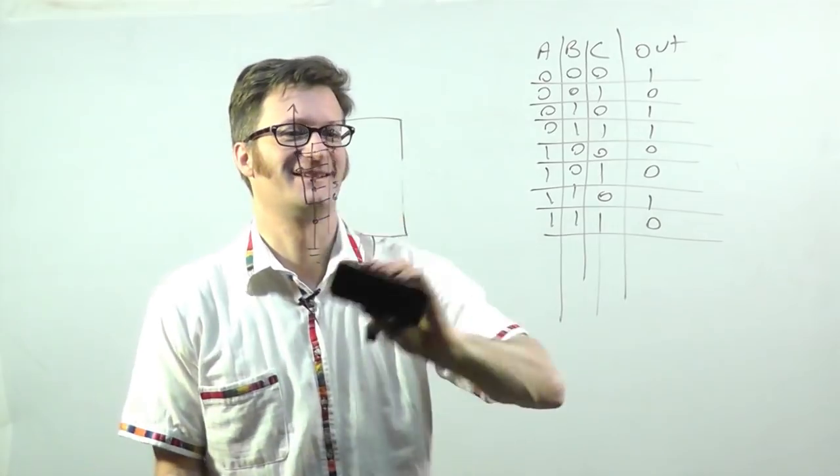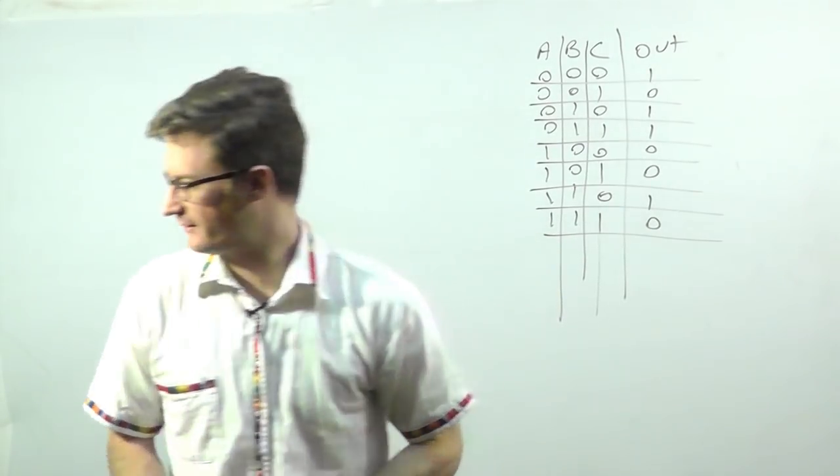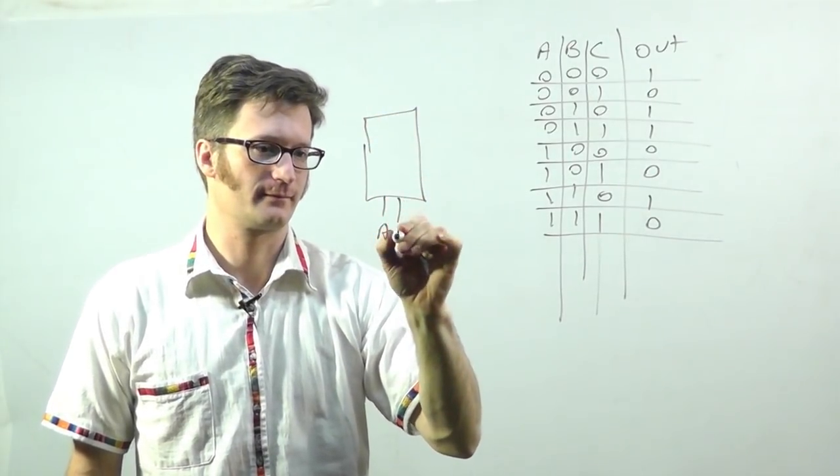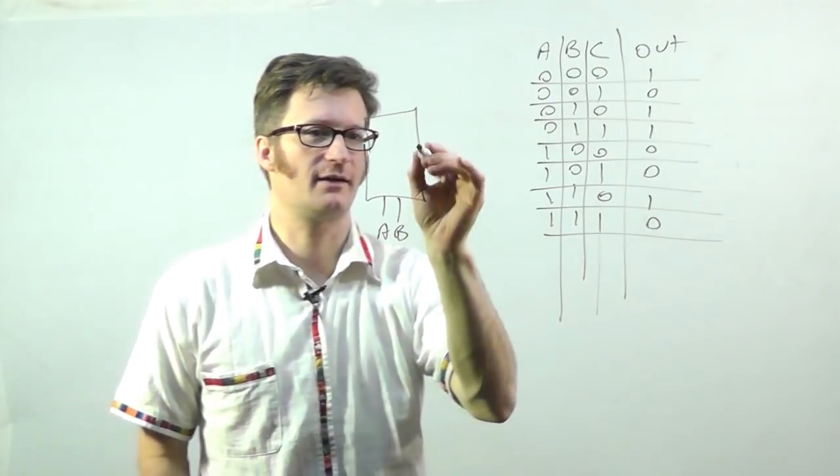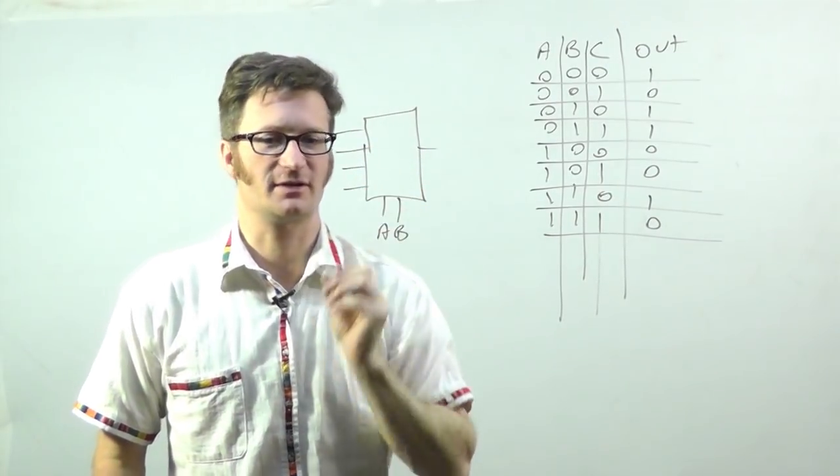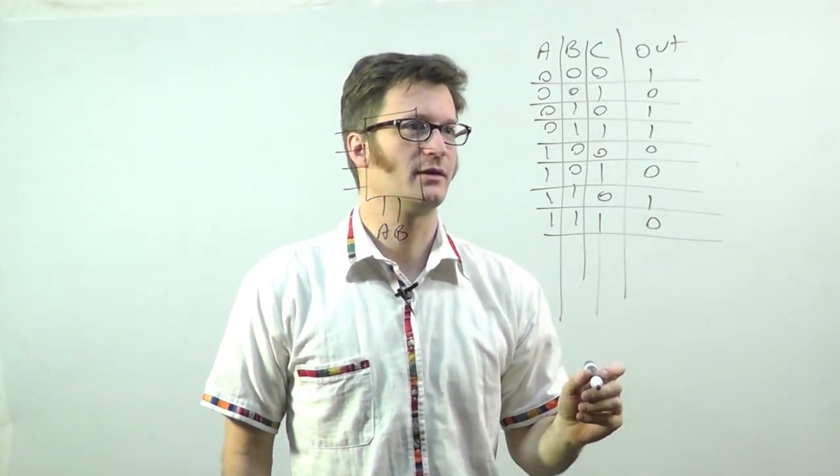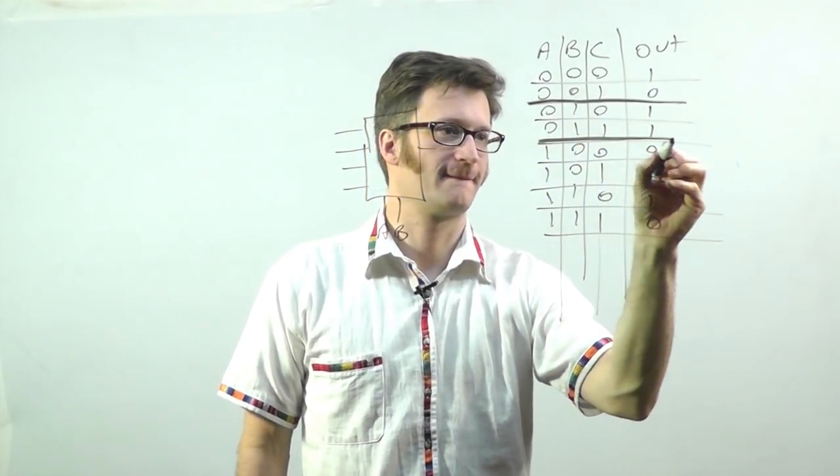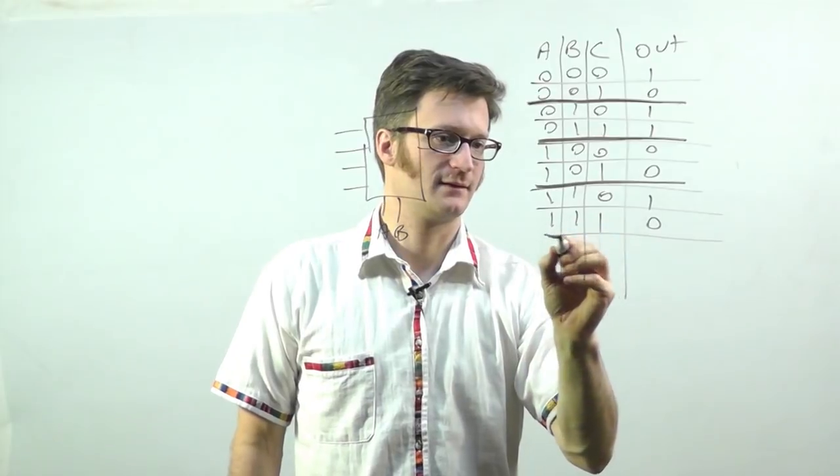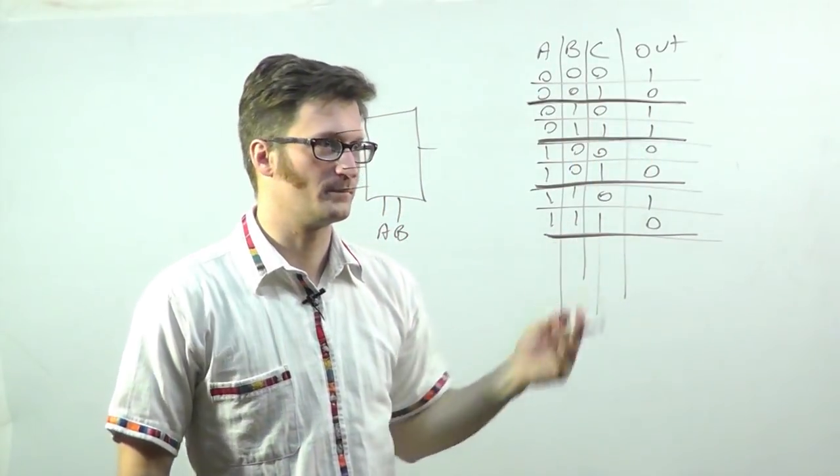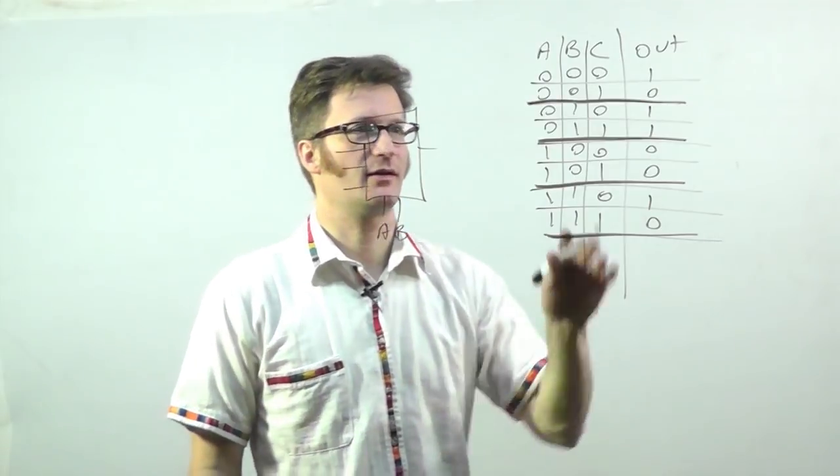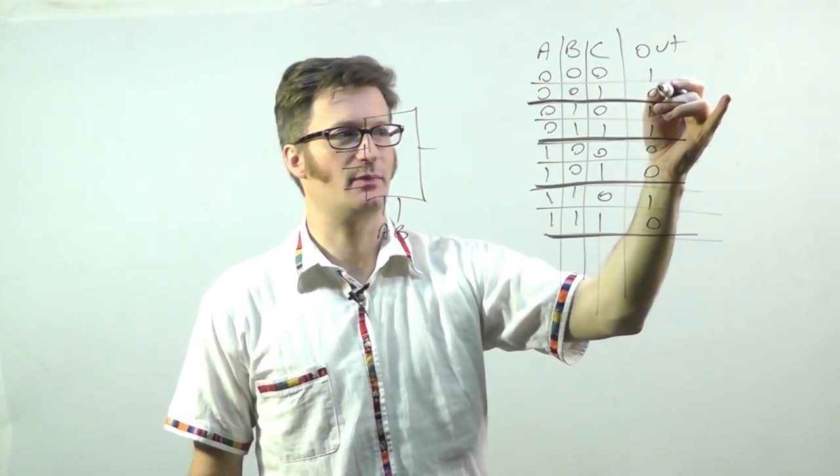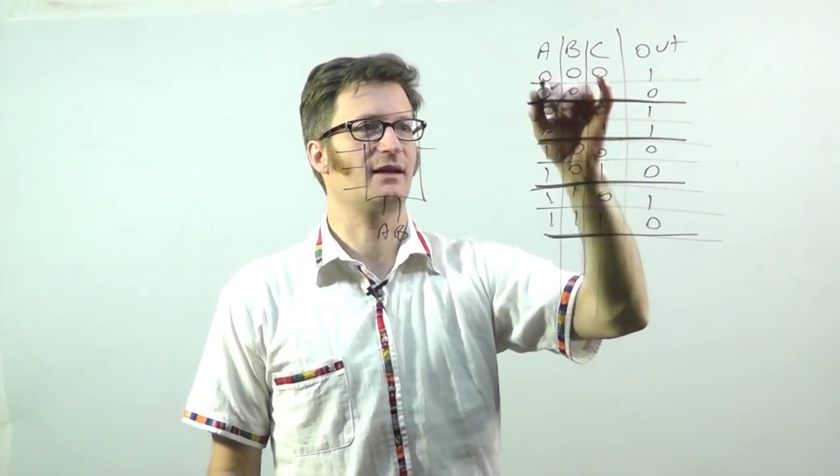But wait, there's more. All right. Let's say I only have a two input multiplexer. Here. Well, you might think that that's not enough to implement this function, but you'd be wrong. What we can do is we divide it. I'll make some thicker lines here. Into two chunks. And we say, okay, a and b are right here. Now let's look at what our output is doing in relationship to c. So when a and b select zero, the output is the inverse of c.